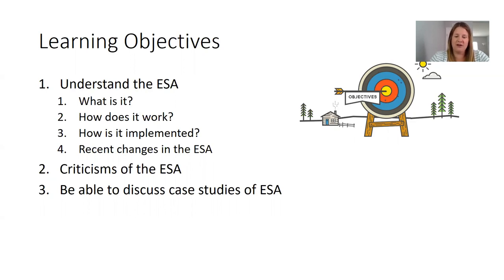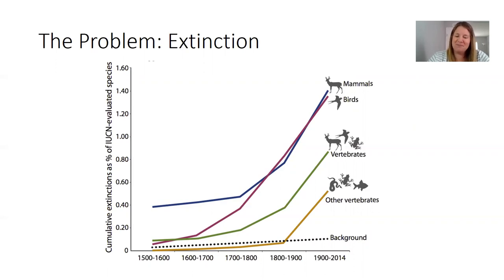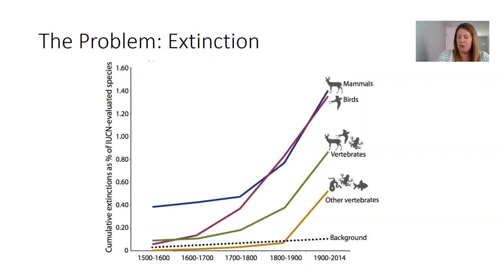So why? What's the issue? It all comes down to extinction. The Endangered Species Act is meant to keep different species from going extinct. This graph shows different extinctions for different types of animals going all the way back to 1500 — these are obviously estimates. You can see particularly as the human population started growing, these numbers go up quite significantly. There's also a background line highlighting that there will always be some extinction not related to humans. Having zero extinction is not the goal — the goal is to minimize extinction directly related to human activity.